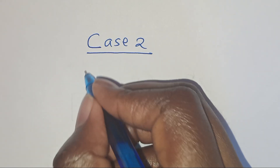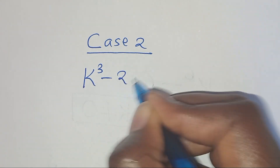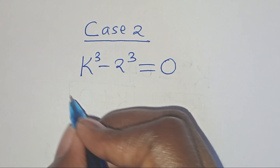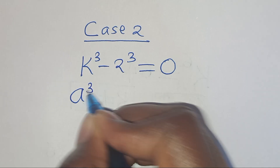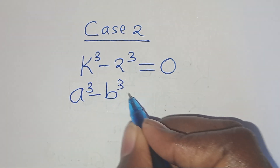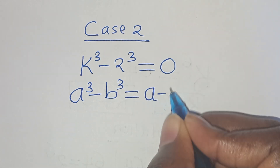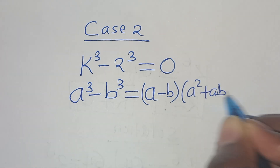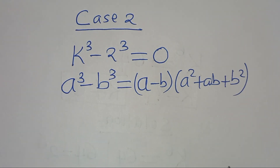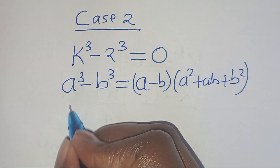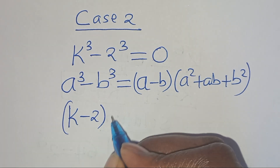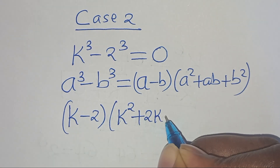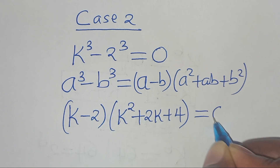In case 2, we have k to the power of 3 minus 2 to the power of 3 equals 0. This is the difference of two cubes, expressed as a to the power of 3 minus b to the power of 3, which can be factored as (a minus b)(a squared plus ab plus b squared). Applying this identity, we have k minus 2, multiplying by k squared plus 2k plus 2 squared, which is 4, equals 0. We again have two parts: the first part is k minus 2 equals 0, and the second part is k squared plus 2k plus 4 equals 0.